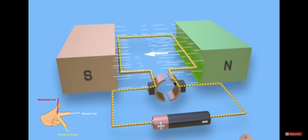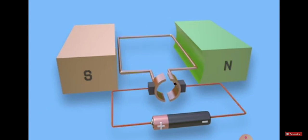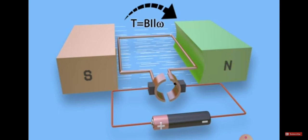Electric current is passing through the motor. For DC motors, two magnetic field forces are present. The torque formula is T = B × I (torque equals magnetic field times current), which governs the movement inside the machine.